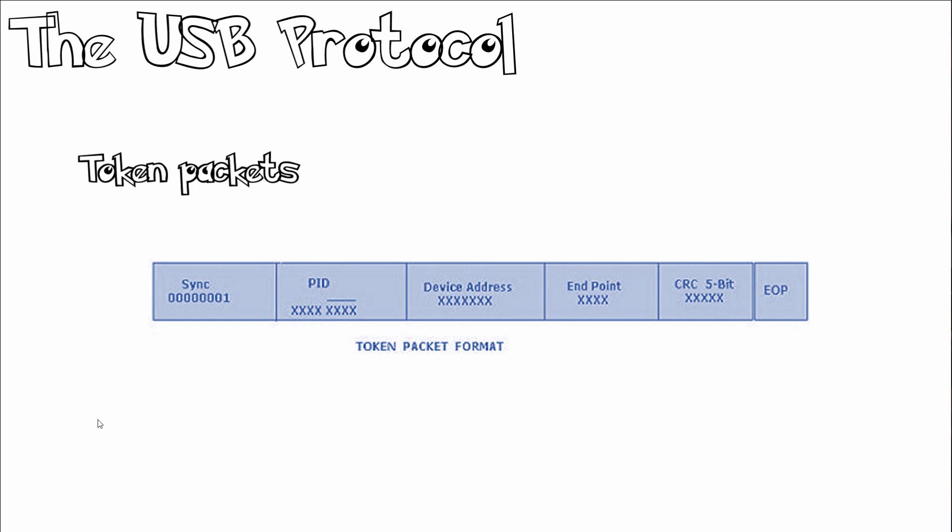Token packets consist of a PID byte followed by an 11-bit address and a 5-bit CRC — cyclic redundancy check — for error checking. Tokens are only sent by the host, not a device. There are three types: IN token (host wishes to read information), OUT token (host wishes to send information), and SETUP token (used to begin control transfers). IN and OUT tokens contain a 7-bit device number and a 4-bit function number used for multi-function devices.